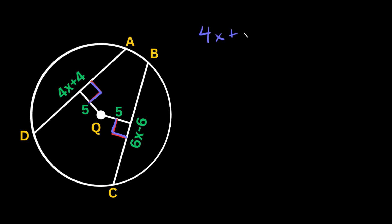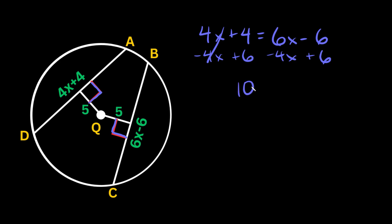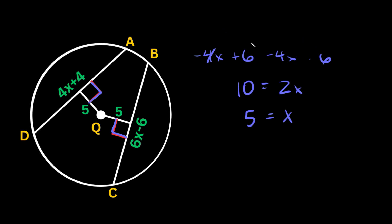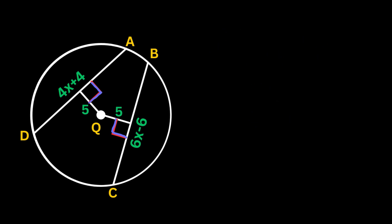Since the chords are congruent, we set their expressions equal: 4x plus 4 equals 6x minus 6. Subtracting 4x and adding 6 to both sides gives 10 equals 2x, so x equals 5. Plugging x equals 5 into 4x plus 4: 4 times 5 is 20, and 20 plus 4 is 24. So the length of both chords is 24.